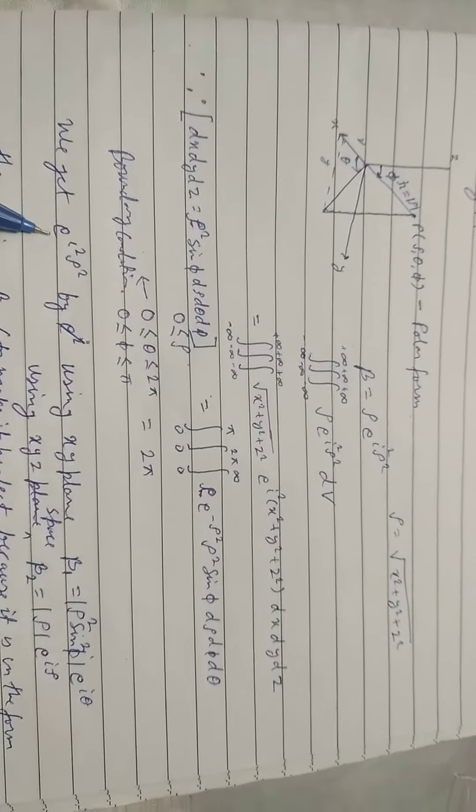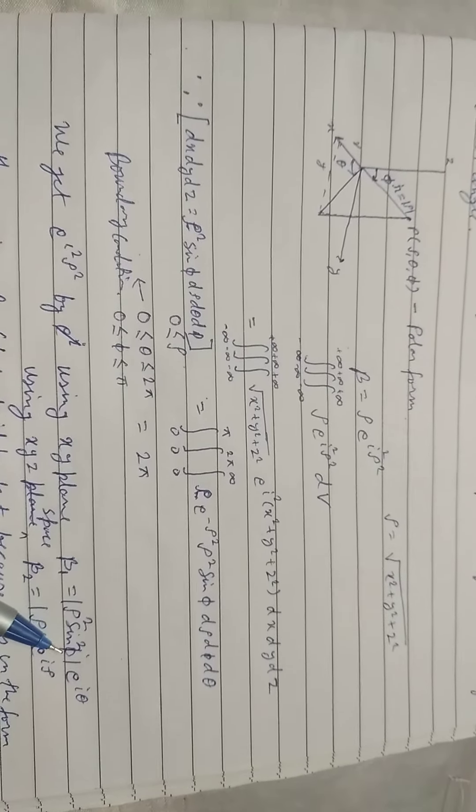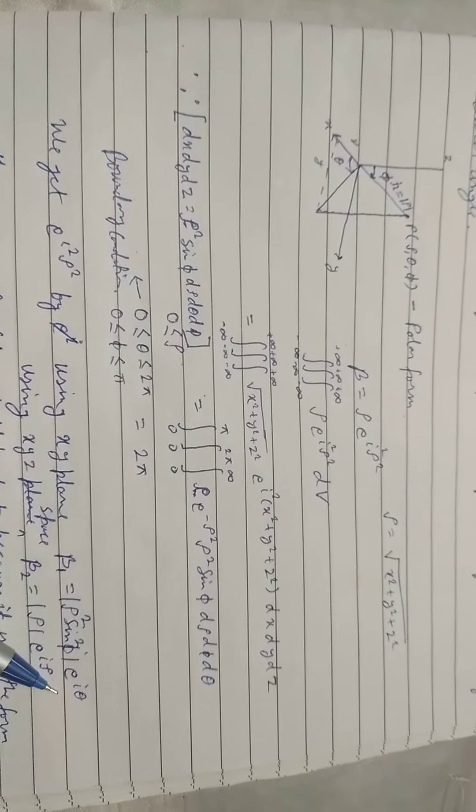We get e to the power i square rho square by using x, y plane, beta 1 is equal to mod of rho square sine square phi e to the i theta.